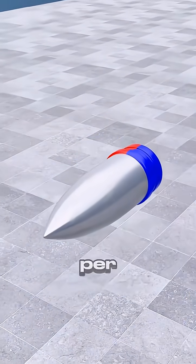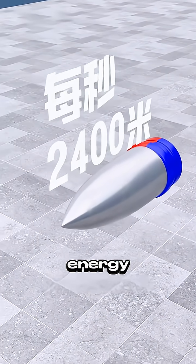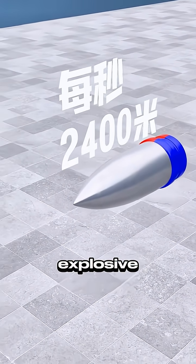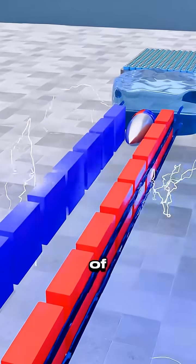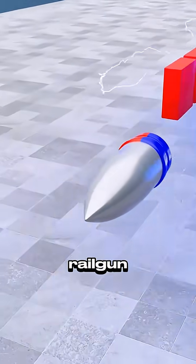At 2,400 meters per second, its sheer kinetic energy surpasses any traditional explosive weapon. Congratulations! You've just mastered the art of electromagnetic acceleration, the railgun.